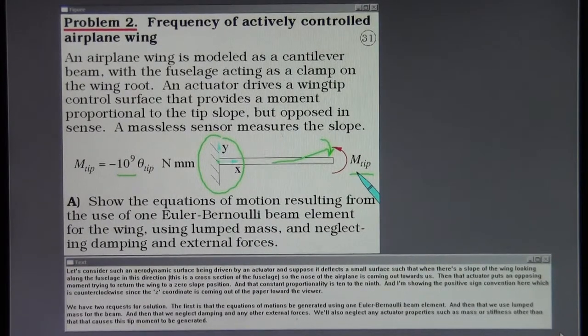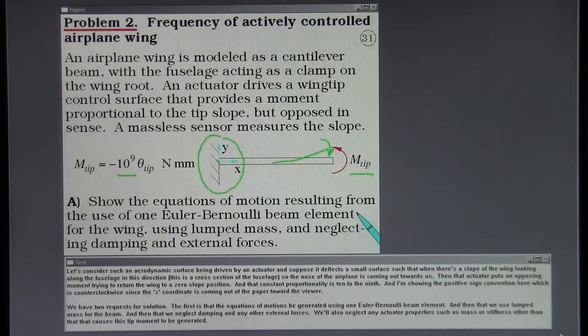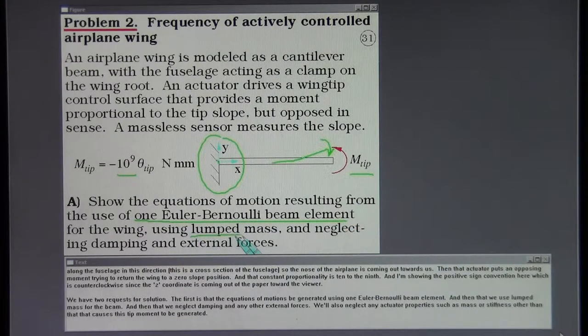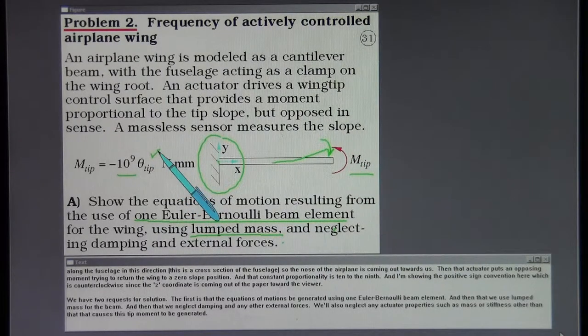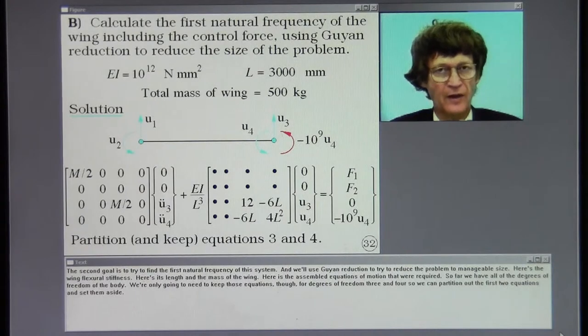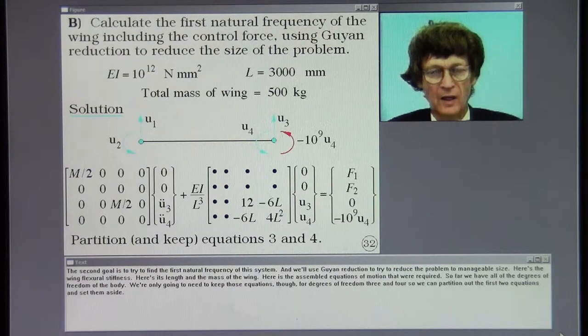We have two requests for solution. The first is that the equations of motion be generated using one Euler-Bernoulli beam element, that we use lumped mass for the beam, and that we neglect damping and any other external forces. We'll also neglect any actuator properties such as mass or stiffness other than that that causes this tip moment to be generated. The second goal is to try to find the first natural frequency of this system. We'll use Guyan reduction to try to reduce the problem to manageable size.